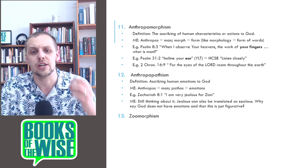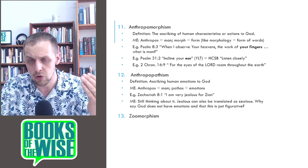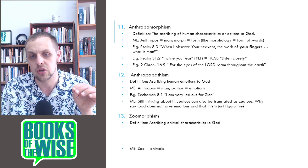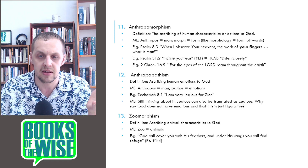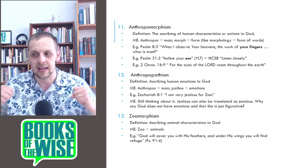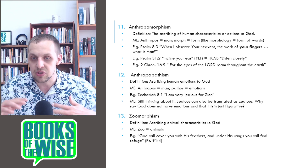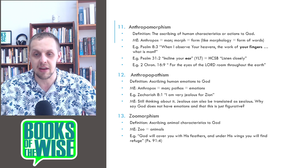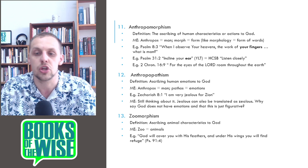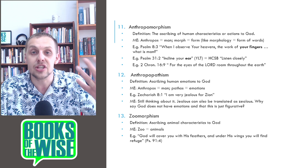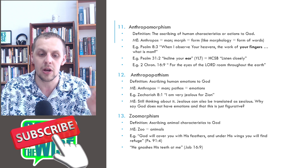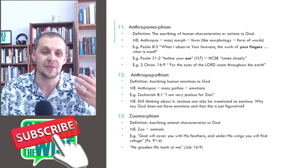The next one is zoomorphism, similar to anthropomorphism but zoo means animals. Zoomorphism is ascribing an animal characteristic to God. For example, Psalm 91:4: God will cover you with his feathers and under his wings you will find refuge — like a bird protecting its young. God doesn't literally have feathers, but it describes an animal characteristic to God for us to understand his protection. Also Job 16:9: he gnashes his teeth at me. If you're finding value, please subscribe to our channel and like our video.